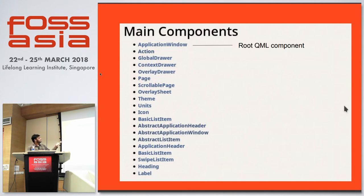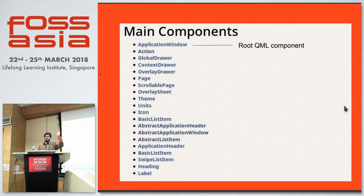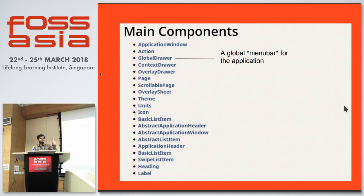A few important components: first is the Application Window, which is your main window and the root QML component — all UI adjustments will be relative to it. And a Global Drawer — it's not really a menu bar on top, but rather the left pane you've seen in each application. It provides a global context for your application. On mobile you don't want a traditional menu bar, so it sits on the left and you can swipe it in and out.